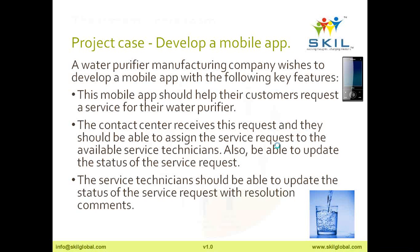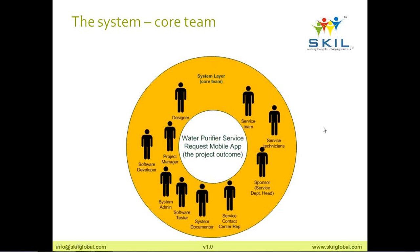We were talking about the three layers. Layer number one is the system layer, which as mentioned is the core team. Keeping that project in mind, please notice the center of the circle is the name of the system itself — in this case, the Water Purifier Service Request Mobile App, which is your project outcome. Sometimes an outcome could be a product, a service, or a result such as a decrease in cost by 50%. The center will be the outcome itself. Around that, we have the system layer, which is the core team.